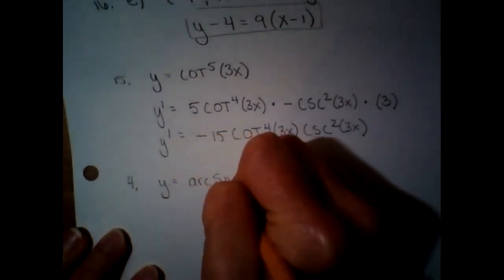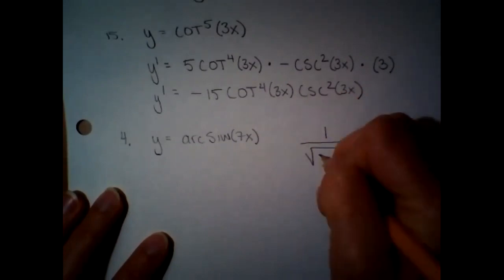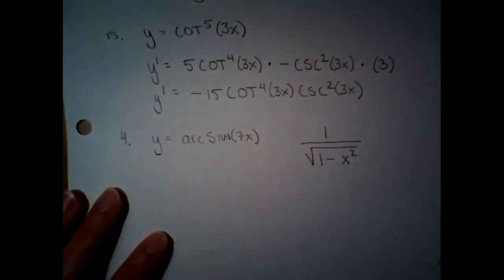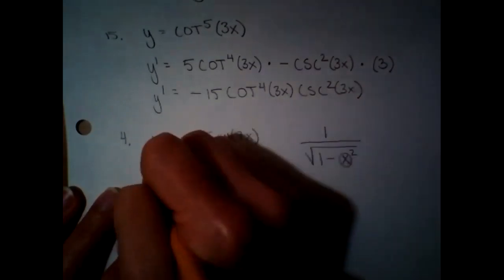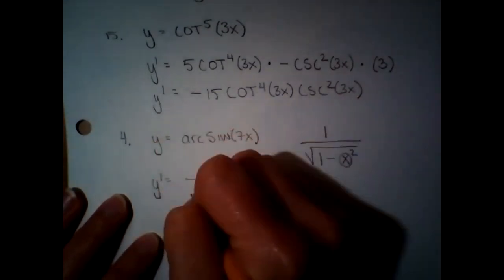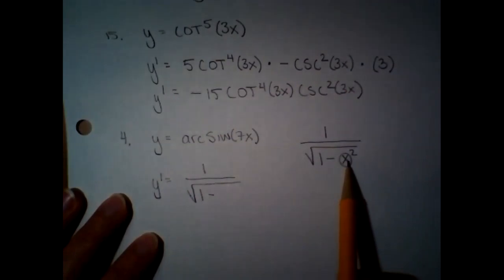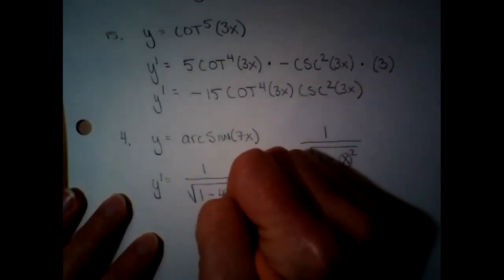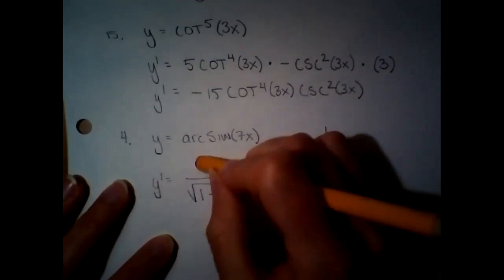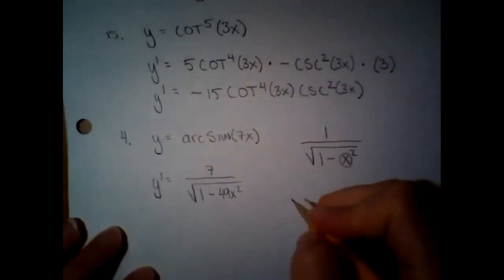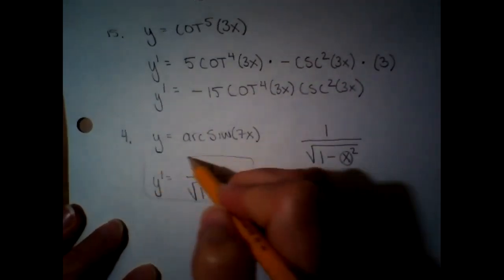Number four: y equals arcsin(7x). The rule for the arcsin derivative is 1 over square root of (1 minus x squared). In place of x we put 7x, and then there's a chain rule. So y prime equals 1 over the square root of (1 minus 49x squared), and we chain on the derivative of 7x, which is 7 — written in the numerator, giving 7 over square root of (1 minus 49x squared).